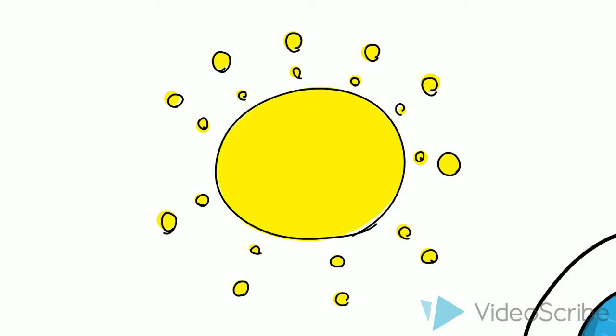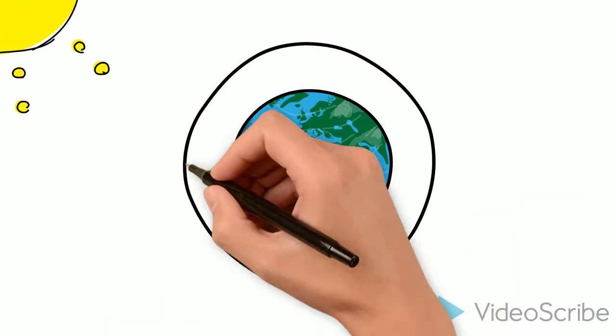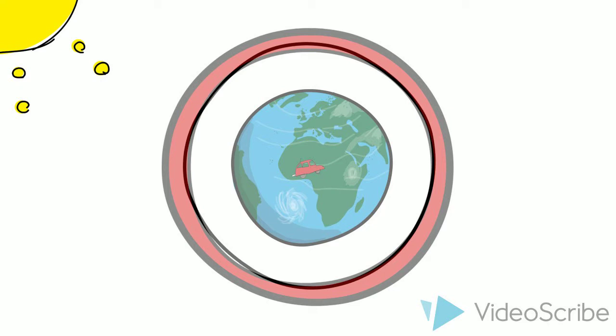This is called the greenhouse effect. The problem is, in the last couple of centuries, we've been burning fossil fuels like gasoline. When we burn gas, like you might in a car, the emissions go up into the atmosphere and become a part of Earth's insulation.